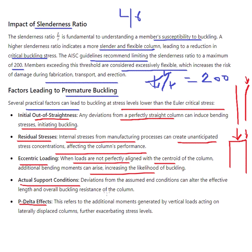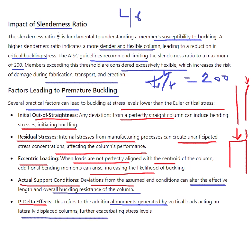Actual support conditions and deviations from assumed conditions can alter the effective length and overall buckling resistance. This also refers to additional moments generated by vertical loads acting on a laterally displaced column, further exacerbating stress levels.